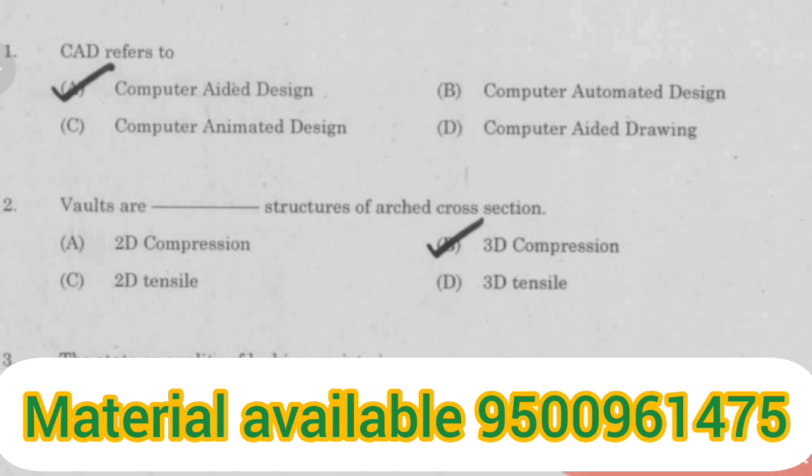Vaults or arch structures of an arched cross-section involve 3D compression. The state or quality of lacking variety is called monotony.